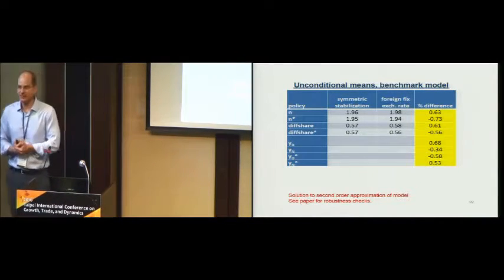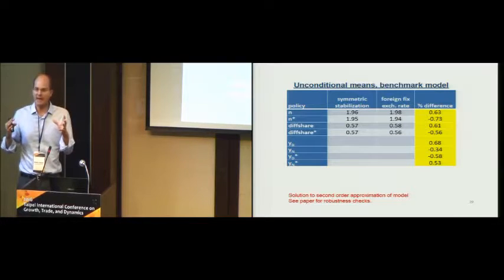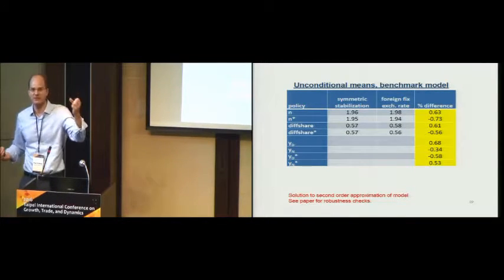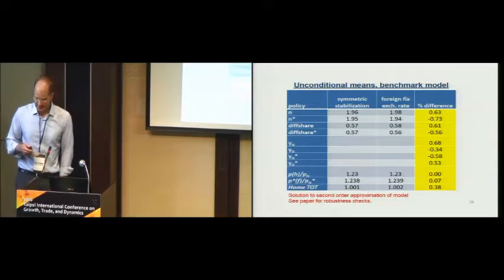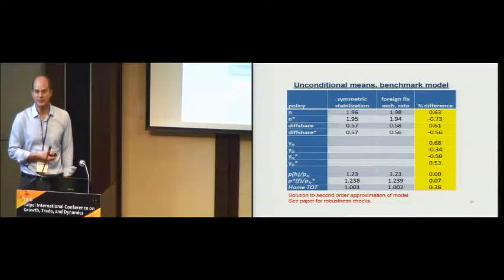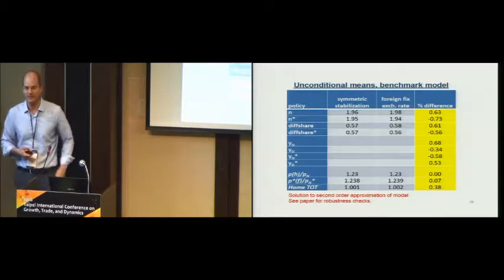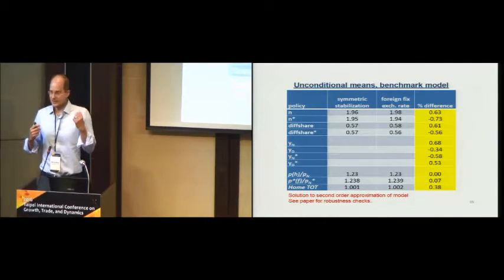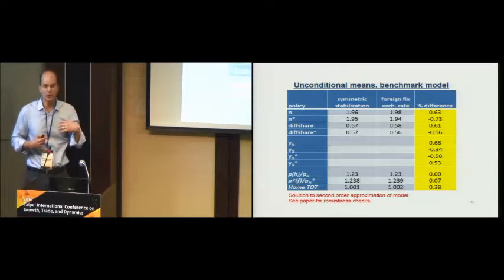One reason we're getting larger effects than typically seen in macro models is that it's all about comparative advantage — one country can change a lot in a way that's offset by the foreign country, so the global aggregate may not change much but individual countries can shift substantially. Looking at the price mechanism, the relative price of differentiated goods in the foreign country has gone up, which is why they've lost comparative advantage. And importantly, if you compute the terms of trade — the relative price of home country exports to foreign country exports — which is the focus of the New Keynesian literature, our model says it's actually optimal to try to lower the price of your differentiated goods exports in order to gain market share.